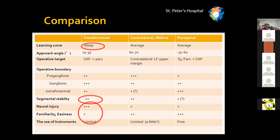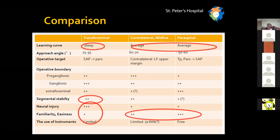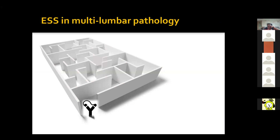Risk of exiting nerve injury is also present with the transforaminal approach. The contralateral and paraspinal approaches are relatively easier and safer, and are familiar and attractive to traditional spine surgeons. However, they are more invasive due to extensive bone work and use of larger endoscopes. You should also consider the risk of posterior instability, especially with the paraspinal approach.